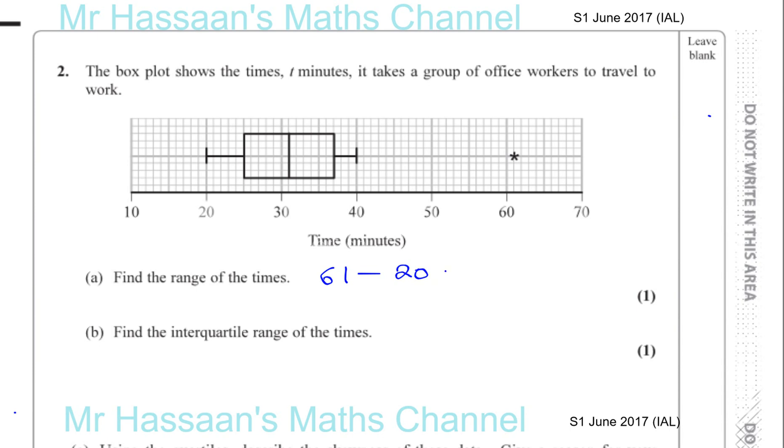The interquartile range is basically the difference between the upper and lower quartiles. Now, the box here shows us the quartiles. So the lower quartile is the lower end of the box, that's Q1. The upper quartile is the other end of the box, which is Q3. We can see here Q1 is actually exactly 25.